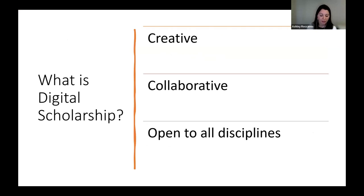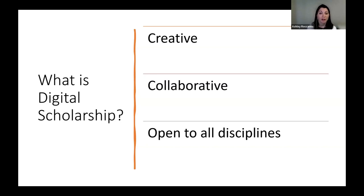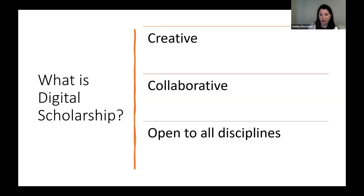Digital scholarship has many different characteristics, but three of the most important are that it is creative and collaborative. You're using tools available to us now in the 21st century to look at traditional questions in new ways, or even possibly find brand new directions and questions. It is collaborative and often interdisciplinary because when you're using some of these digital technologies, it allows folks to work together who might otherwise not have had cause to. It can bring together people from different departments and units on the university. Here at AU, digital scholarship is open to all disciplines and all researchers — faculty, staff, and students — so we are calling it digital scholarship to showcase that it is for everyone.